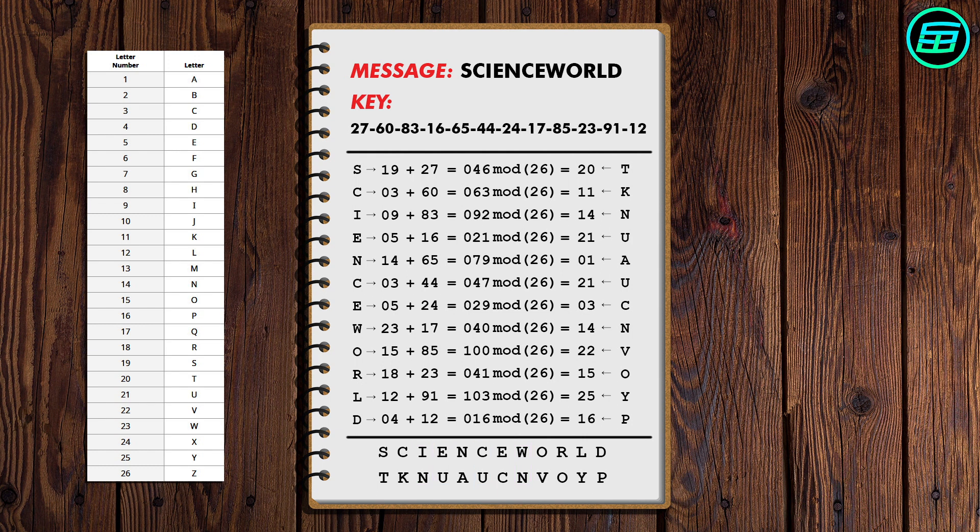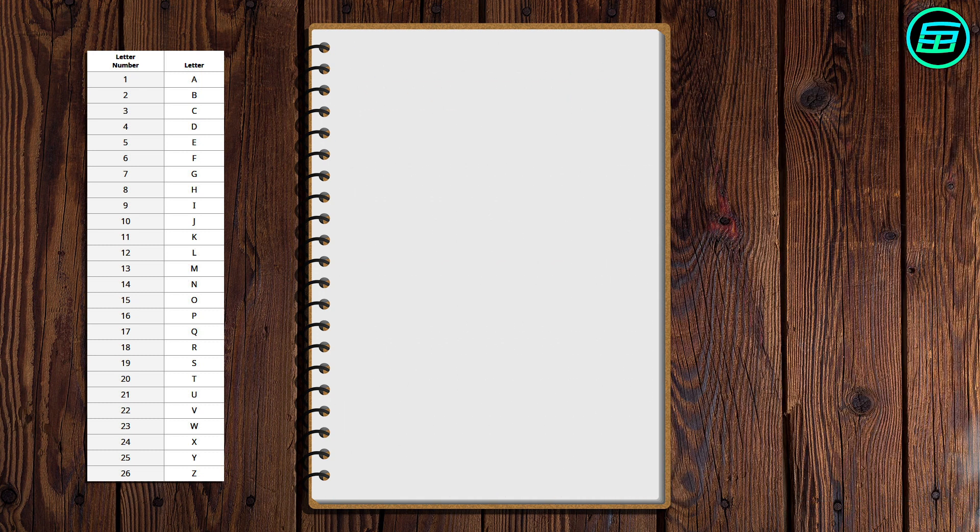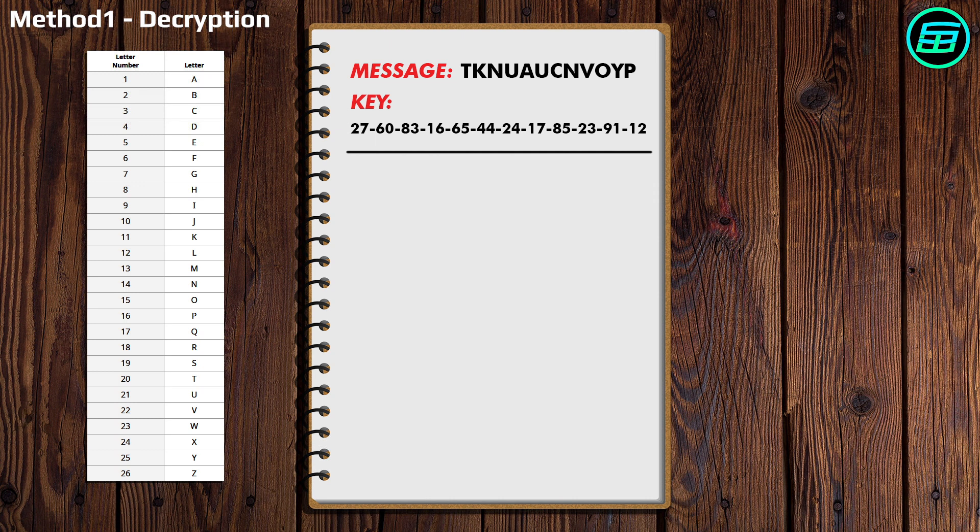Now we need to destroy the key to provide perfect security. When the receiver gets the message, they first have to identify the numbers of the letters. Next, they subtract these numbers from the numbers on the key, one at a time.